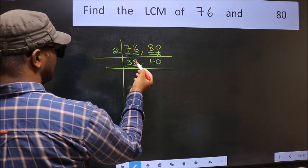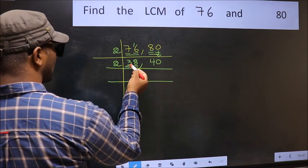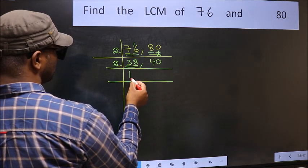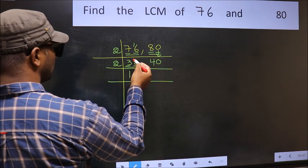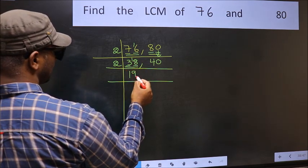Now 38. Last digit 8 is even, so take 2. First number 3. A number close to 3 in the 2 table is 2 times 1, 2. 3 minus 2 is 1. Carried forward 18. When do we get 18 in the 2 table? 2 times 9 is 18.